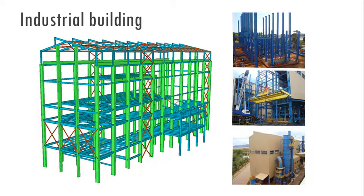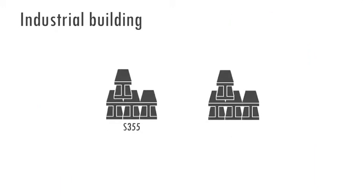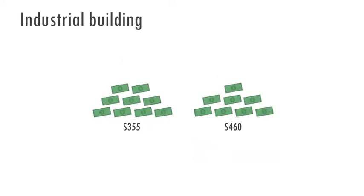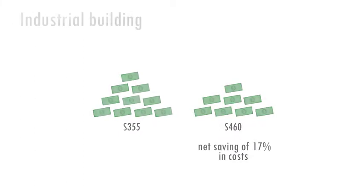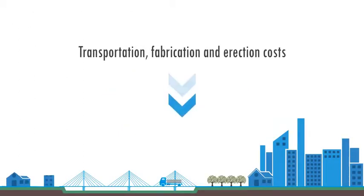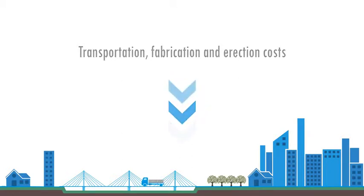Using less material also enables cost savings and even though high-strength steels are generally more expensive, the overall savings are significant enough to offset the initial investment. Using less steel also reduces the costs associated with transportation, fabrication and erection.